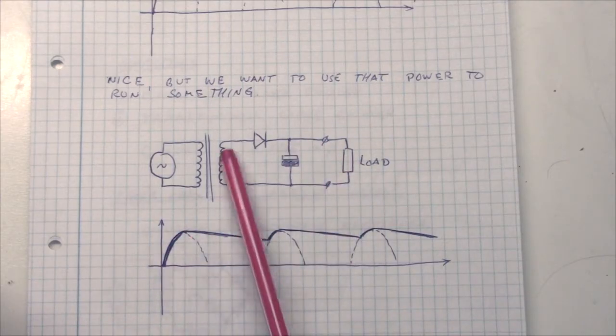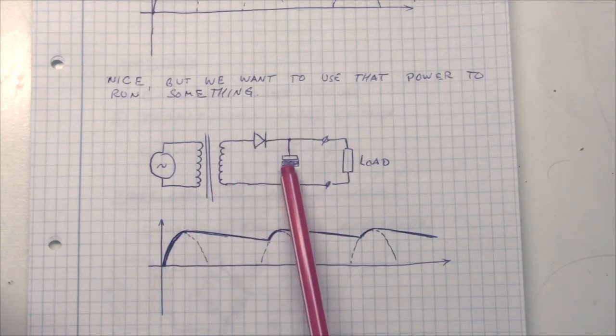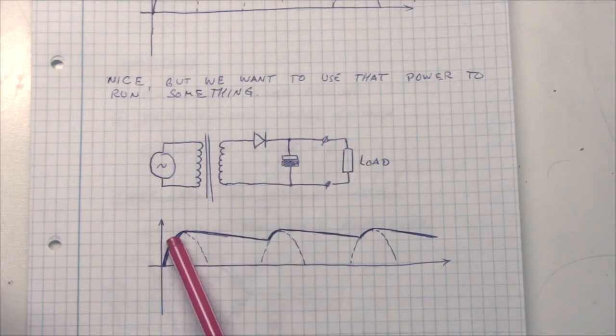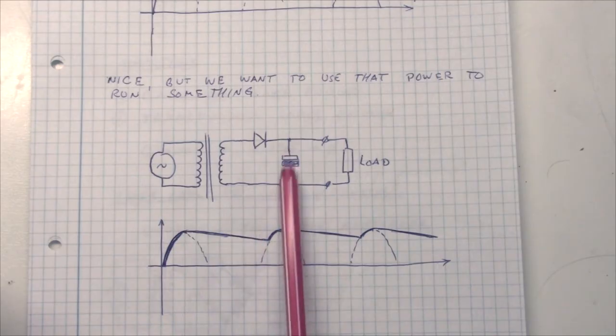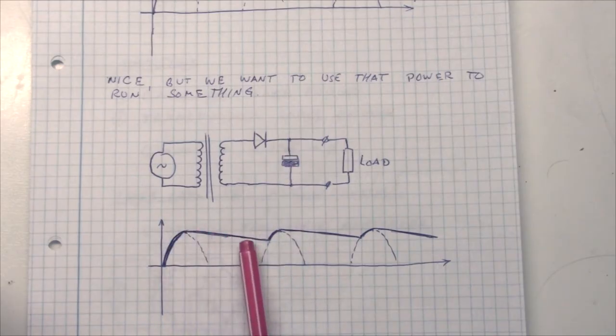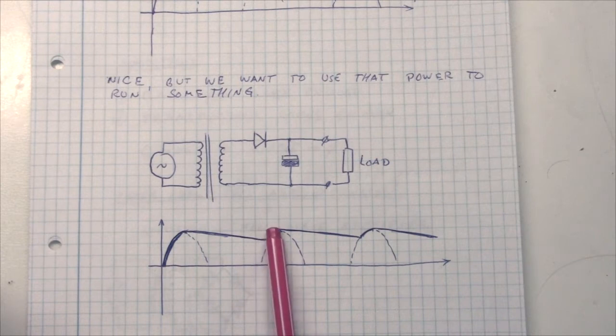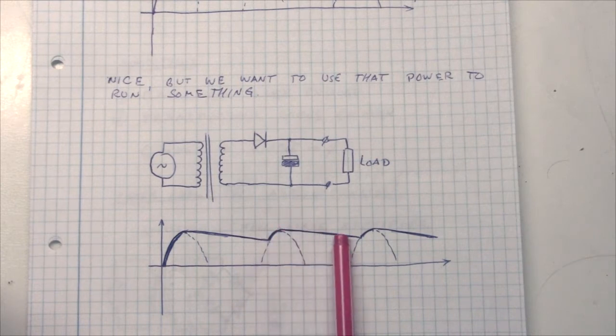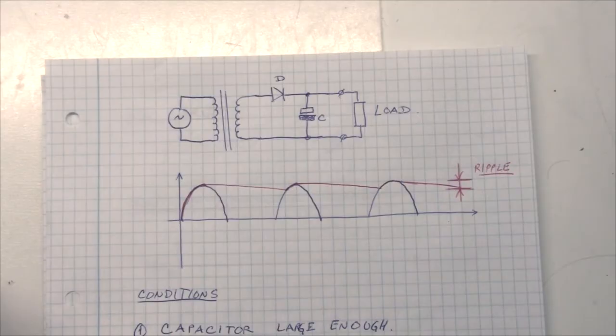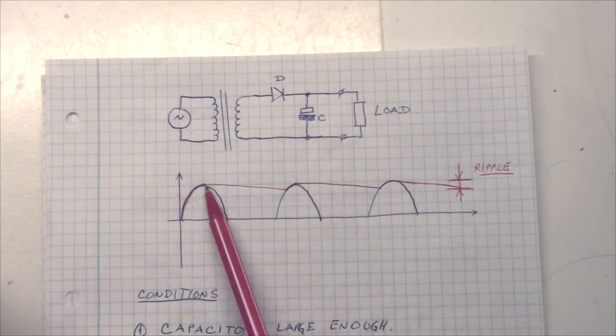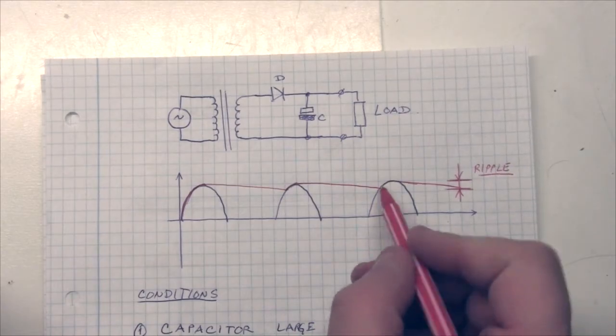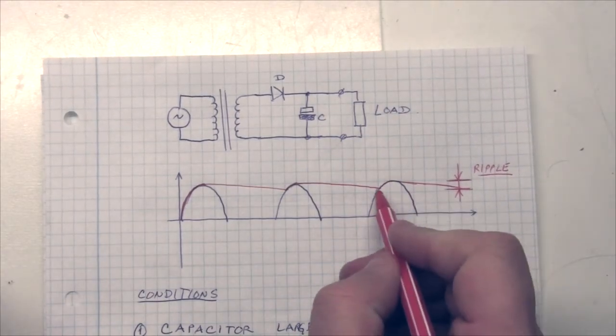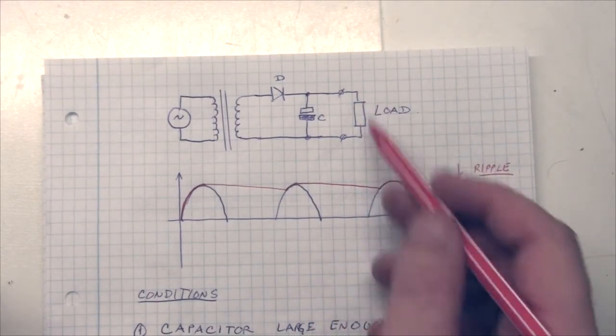So what happens here is that, we will of course charge the capacitor during the first pulse, the first wave. And then the load will use some current. And it can't get current from the transformer. It has to get current from the capacitor. So the voltage on the capacitor will start dropping slowly. Then we have another pulse from the diode. It will charge again, and then it will discharge slowly. And that is what we call the ripple. The ripple is the noise on top of the DC, so to speak. The ripple is the maximum and the minimum value of this voltage drop on the capacitor.